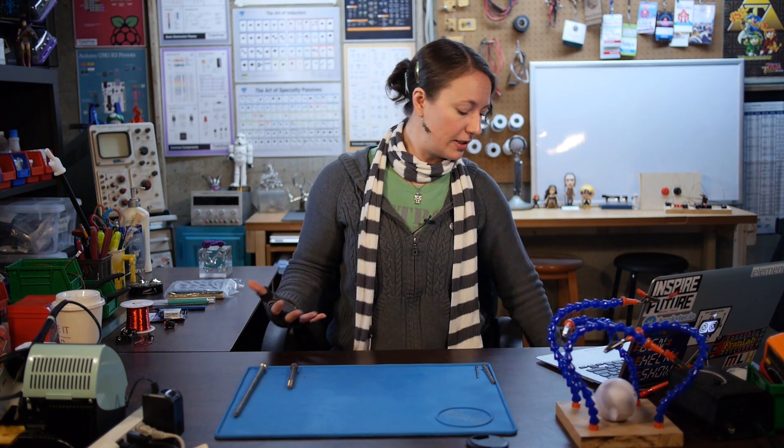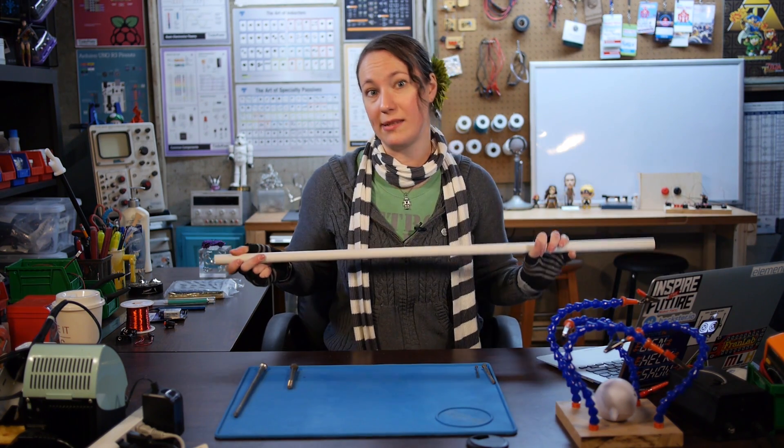For our pickup tool, we'll need to actually make the electromagnet. We also need a handle. I want mine to be able to reach the floor, so I'm going to use a three-foot piece of PVC pipe.